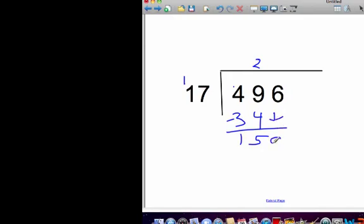And then just using estimation here, I know 17 times 10 would be 170. So it's not quite going to be 10, but I would try 9. 9 is one step below that.